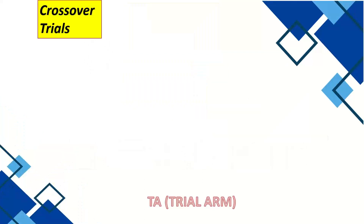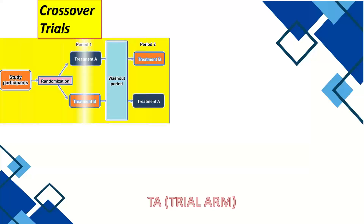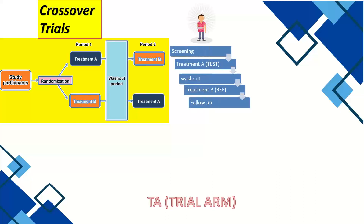In crossover studies, the subject is exposed to more than one drug. After randomization, the subject assigned to Treatment A in Period 1 takes Treatment B in Period 2, and vice versa. For example, one subject first goes through screening, then takes Drug A as the test drug, then enters a washout period. Washout is the time needed for the drug to be eliminated from the body before giving the next drug.